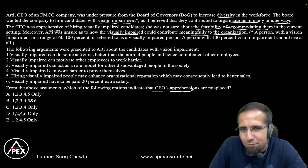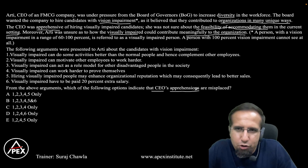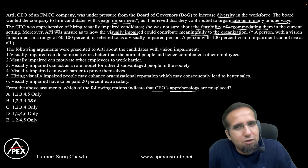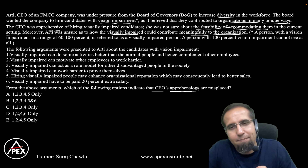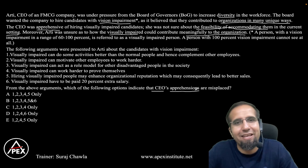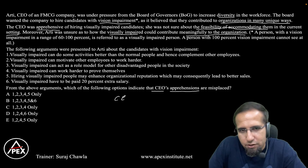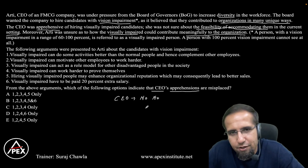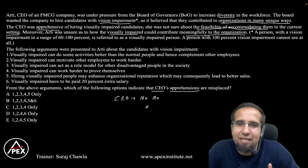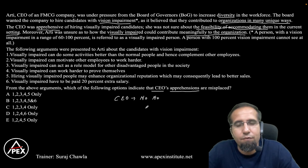A person with vision impairment in the range of 60 to 100 percent is referred to as a visually impaired person; 100 percent means they cannot see at all. Various arguments were presented to Aarti about candidates with vision impairment. The question asks which options indicate that the CEO's apprehensions are misplaced. The CEO's apprehensions are: these candidates might not contribute meaningfully, and she was unsure about the feasibility of accommodating them in the current setup.